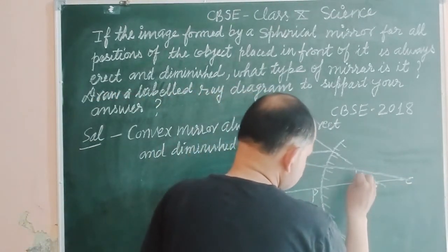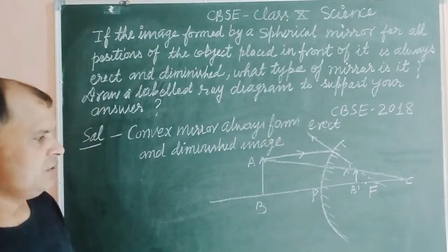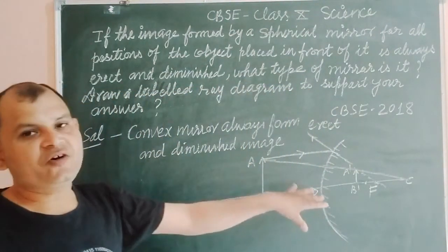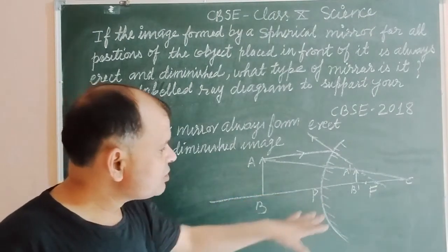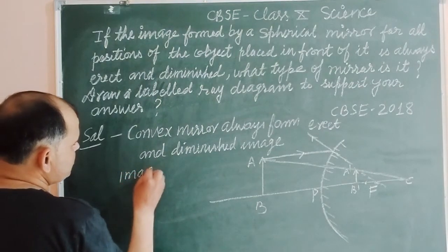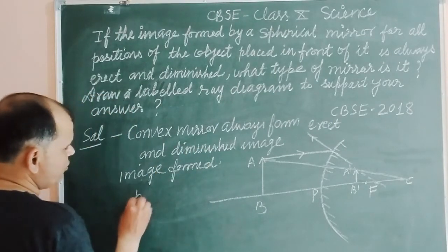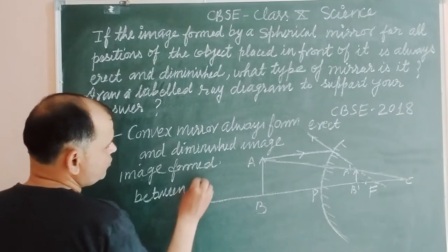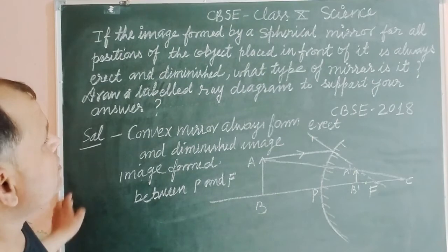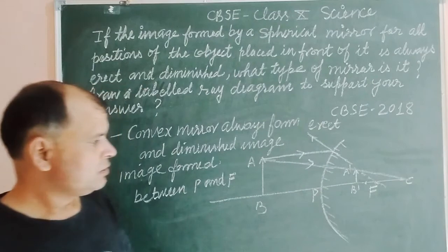So this is the image formed for the object placed in front of the mirror. A'B' is the image of object AB. The image is formed between the pole P and focus F in this case. So this is our labeled ray diagram of image formation.